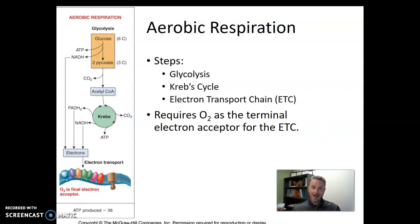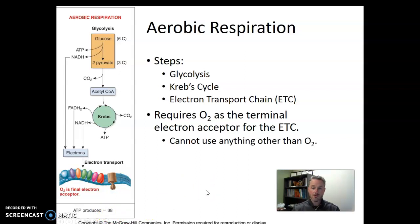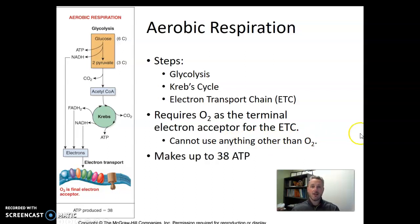The whole reason the cell is doing respiration is to make ATP. This figure clearly lists at the bottom the theoretical maximum yield of ATP for aerobic respiration: 38 ATP molecules. Aerobic respiration uses oxygen and cannot use any other chemical other than oxygen for the terminal electron acceptor. These steps produce a maximum of 38 ATP.